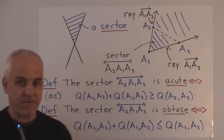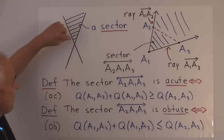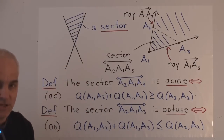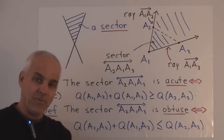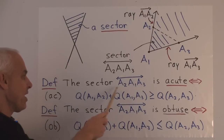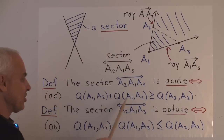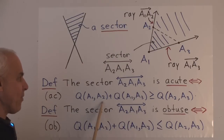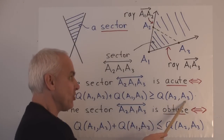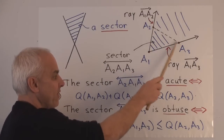Here are two important definitions concerning acuteness and obtuseness of sectors. We want to capture the idea that one sector is acute while another is obtuse, but without talking in terms of angles — we'd rather use rational trigonometry concepts. We say that the sector A2→A1→A3 is acute precisely when the quadrance between A1 and A2 plus the quadrance between A1 and A3 is greater than or equal to the quadrance between A2 and A3.